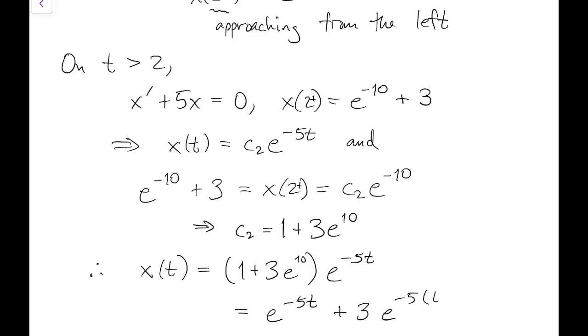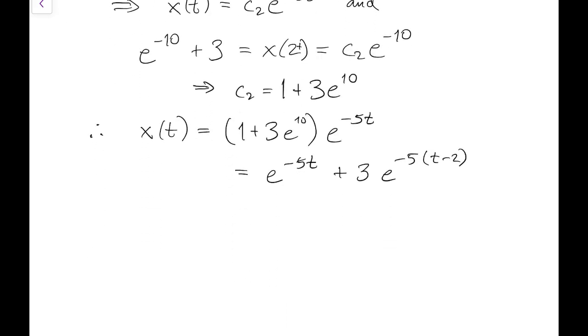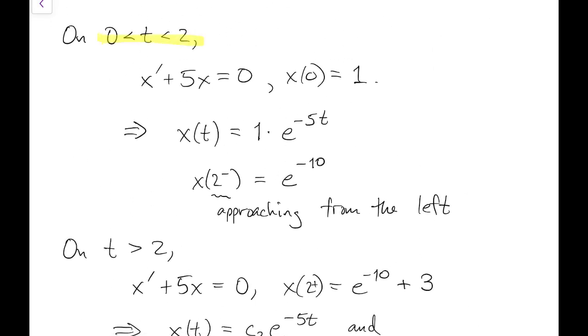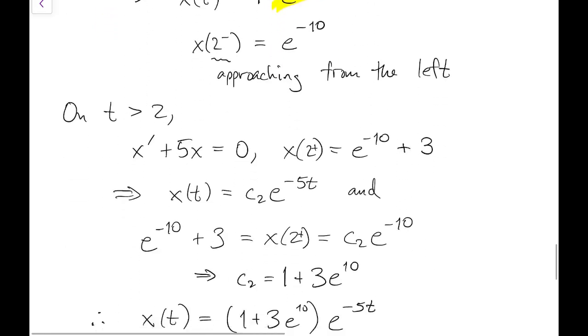I'll rewrite this solution segment in a certain way to make a point. This term is actually just an exponential decay solution that was delayed by two time units. That is the full effect of the impulse. Finally, we can write the entire solution in one formula by using a step function that turns on at t equals 2.